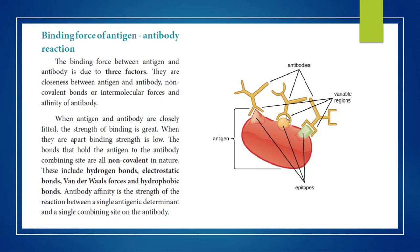The epitopes combine with the antibody molecules at the paratope. This is called the binding force. Chemically, there are different bonds that occur between these molecules: hydrogen bonds, electrostatic bonds, van der Waals bonds, and hydrophobic bonds. These are the different forces that combine the antigens and antibodies.